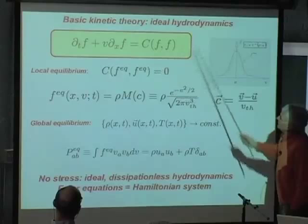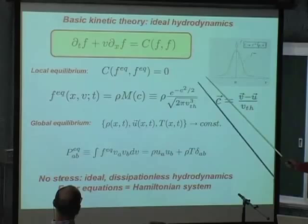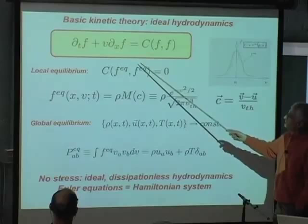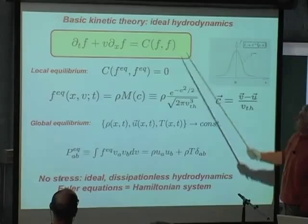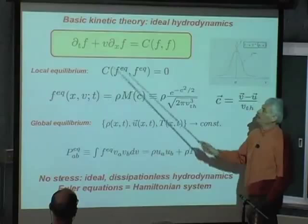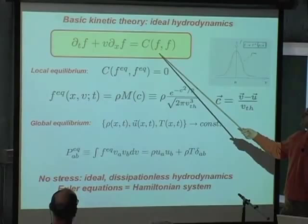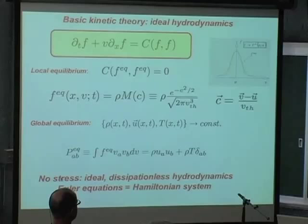The first thing you need to do is understand whether there is a solution of this equation which annihilates the collision operator. The question is: suppose I am totally steady, so I drop the time derivative. I am homogeneous, so I drop the space derivative. Is there any distribution function such that the collision operator is annihilated too? In which case, I have a fixed point of the Boltzmann equation. And yes, it turns out that there definitely is a solution of this problem — a quite important one.